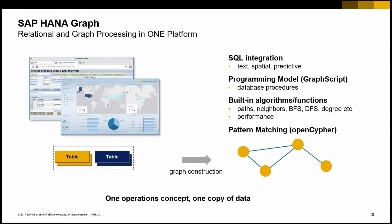SAP HANA is a relational database management system powering both transactional and analytical applications, but it also provides a built-in graph engine. You can use SQL to derive a graph from a relational or columnar model, and then within the same system work with your network. One supported feature is the openCypher query language for detecting patterns in your graph — for example, finding a person named Fred who is married to a person living in France within a social network.